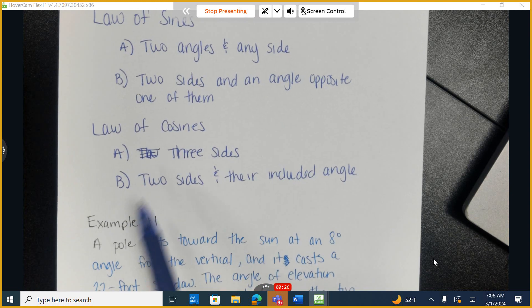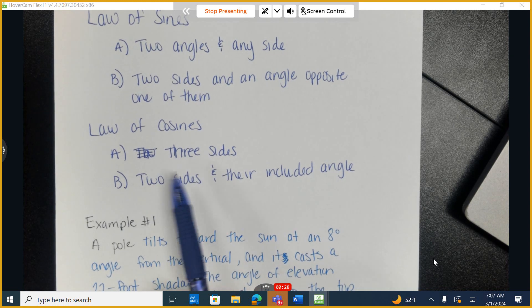When do we use the law of cosines? When we're provided with three sides or two sides and the angle that's created where those two sides meet.